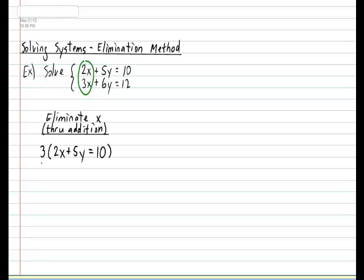But remember, we want it to be the same number but with a different sign. So we have to multiply it not just by 2, but we have to multiply it by minus 2. And when you do your distribution, you end up with the following: 6x plus 15y is equal to 30.